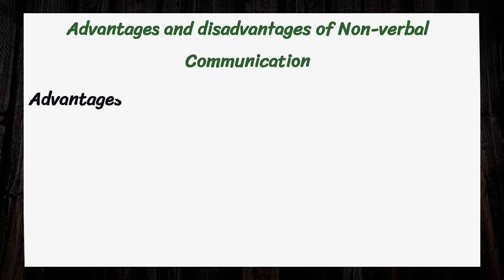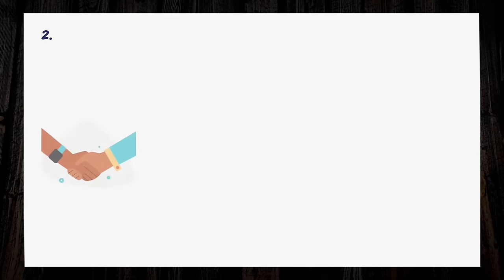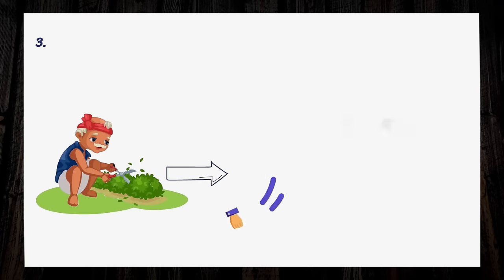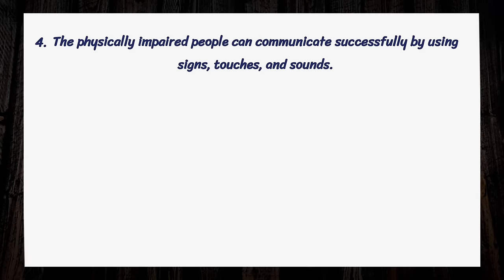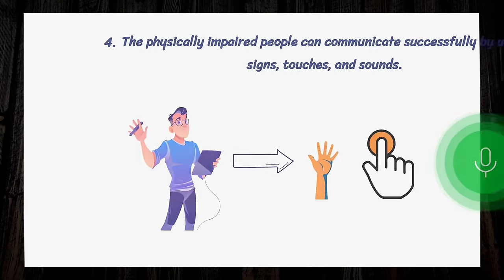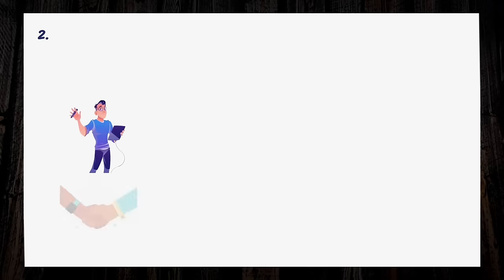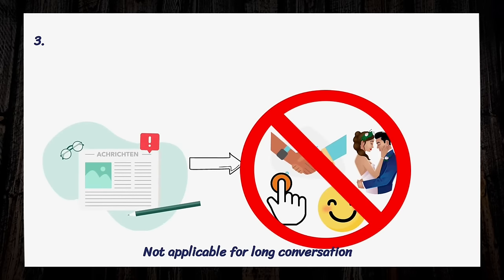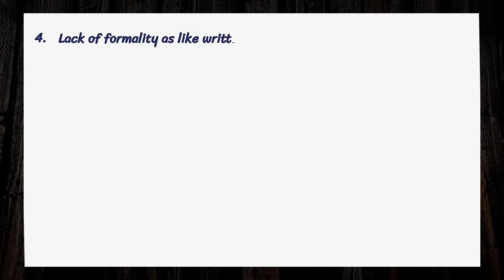Now let's discuss some advantages and disadvantages of nonverbal communication. Advantages: it complements verbal communication by adding clues and additional information for better understanding. The use of gestures, facial expressions, and signs makes presentations very easy. Usage of gestures, signs, facial expressions, and touch helps illiterate people communicate properly. Physically impaired people can communicate successfully by using signs, touches, and sounds. Disadvantages: many people find nonverbal communication unreliable because of its lack of precision. Many people find it difficult to understand nonverbal elements. Long conversations cannot be conducted using kinesics, proxemics, signs, and symbols. There is also a lack of formality compared to written and oral communications.